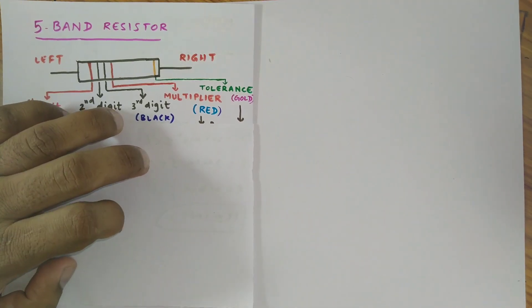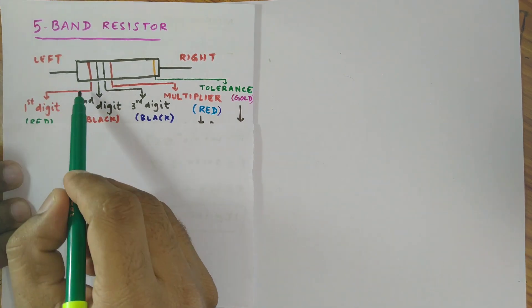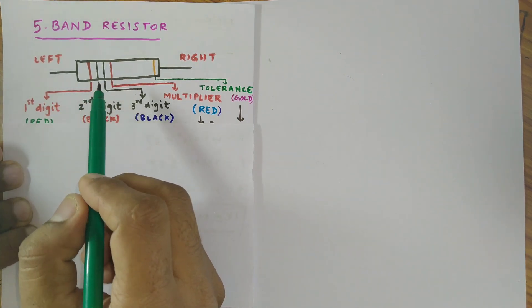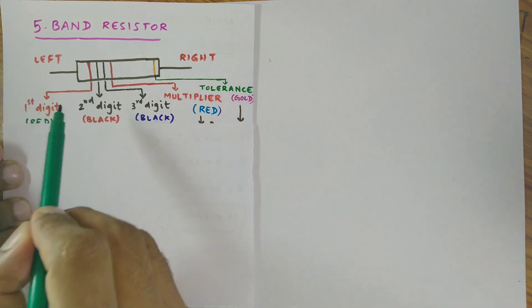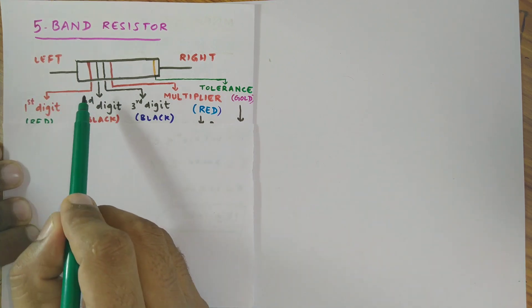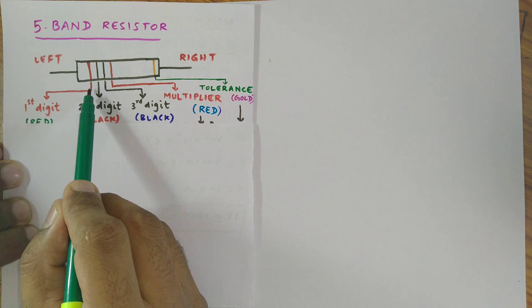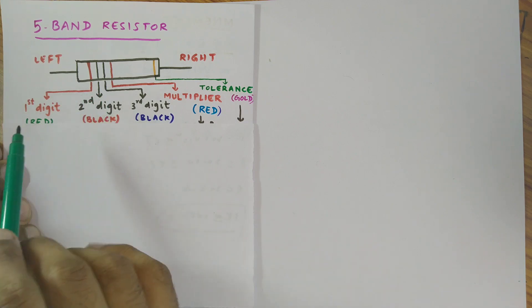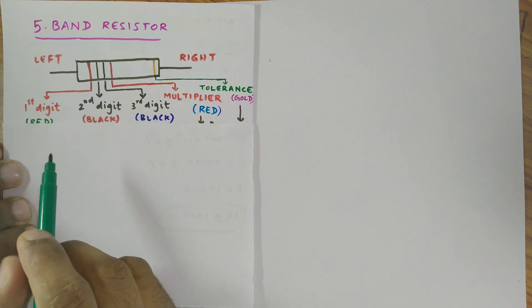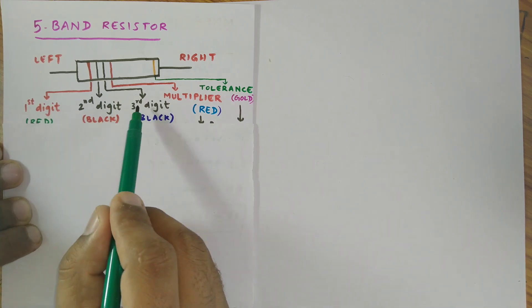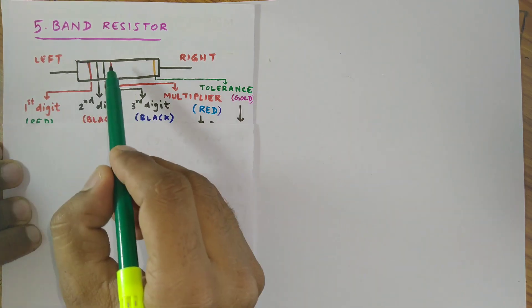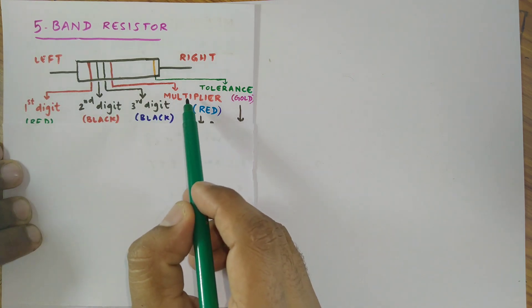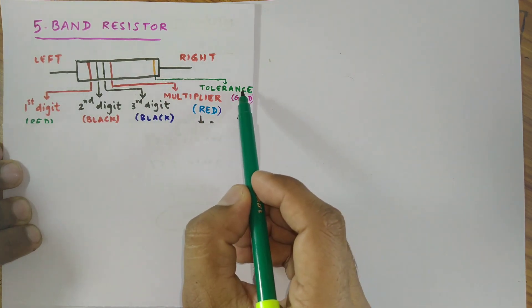Here if you look I have drawn the diagram of a 5 band resistor. In a 5 band resistor first 3 rings represent significant figures or digits, whereas 4th ring represents multiplier and 5th ring represents tolerance.